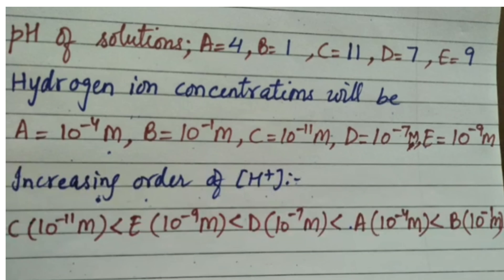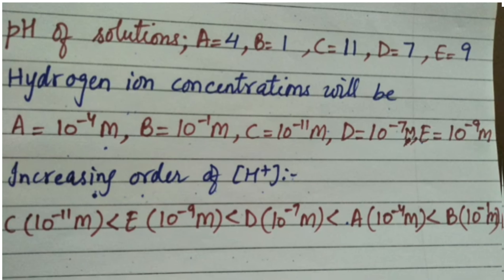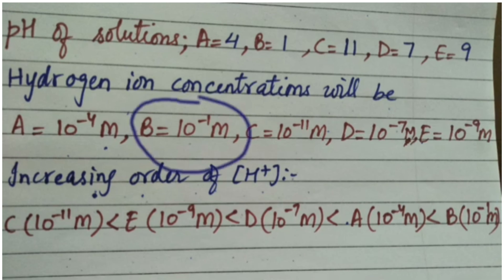The increasing order of hydrogen ion concentration of these solutions will be: B has the highest concentration of hydrogen ions, then A followed by D, E and C.